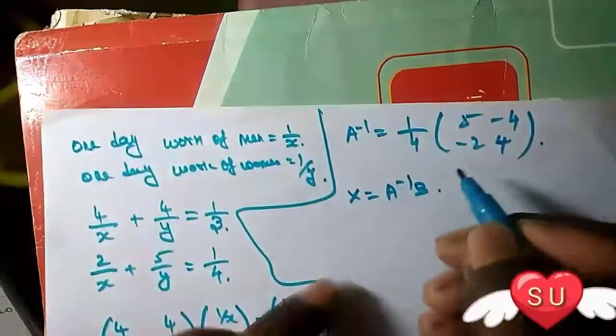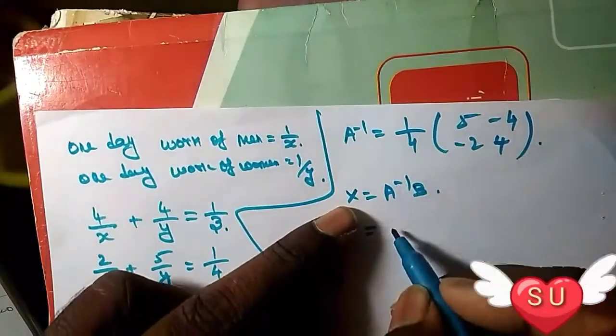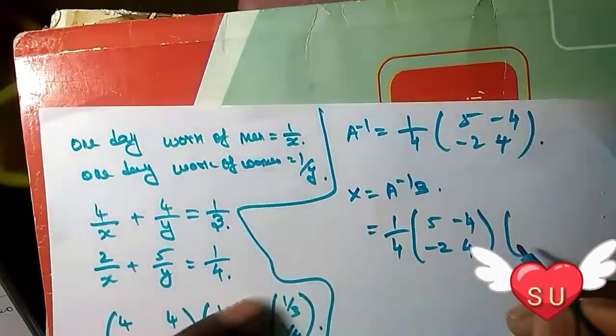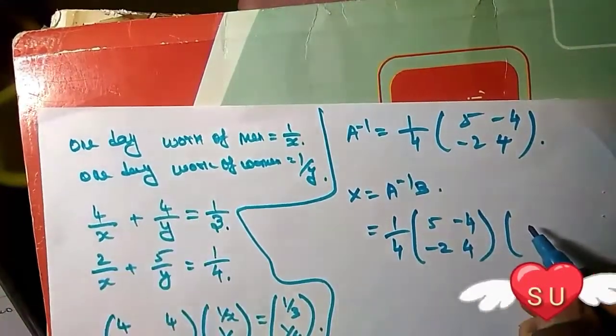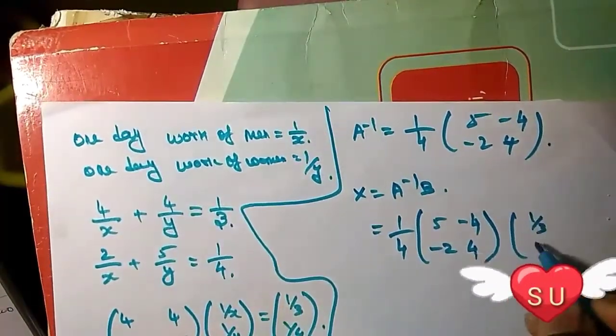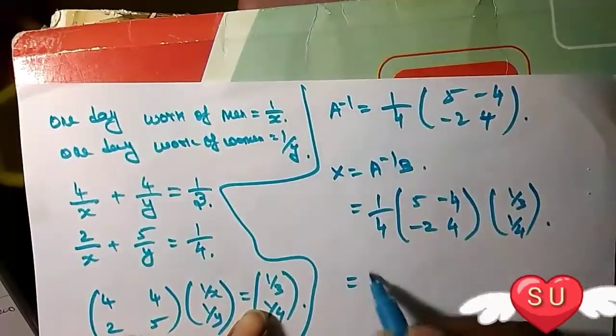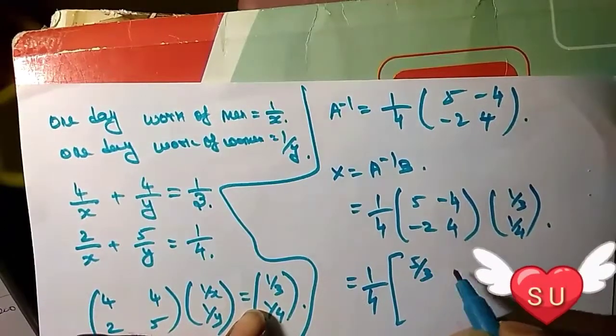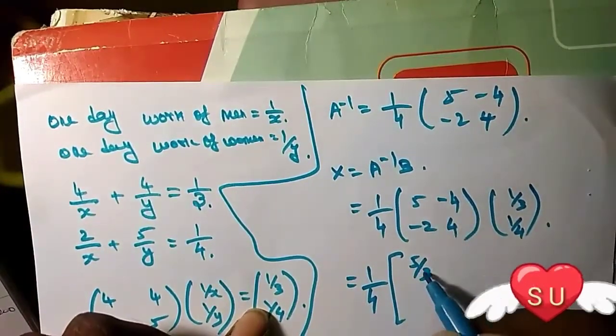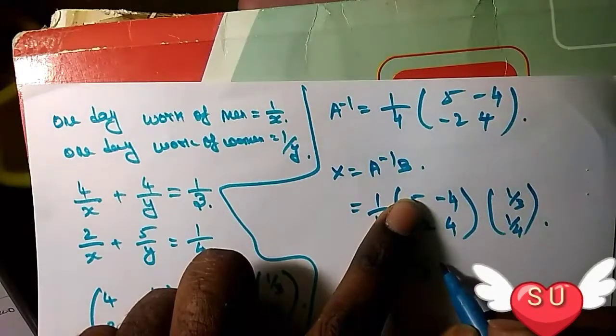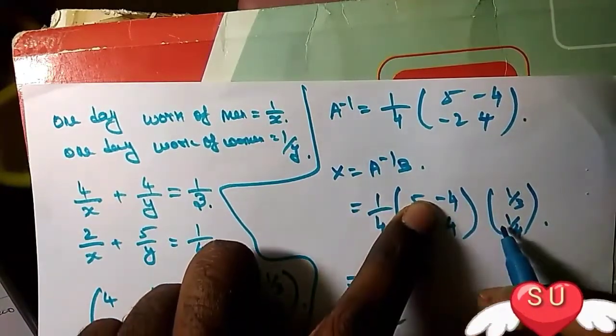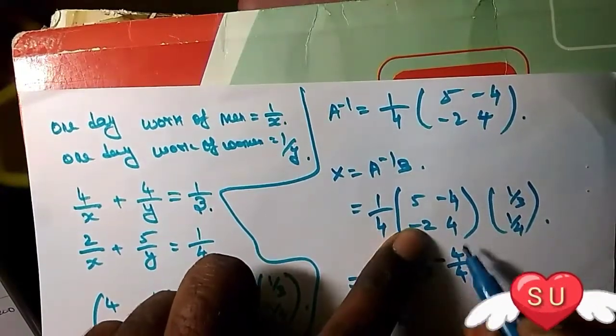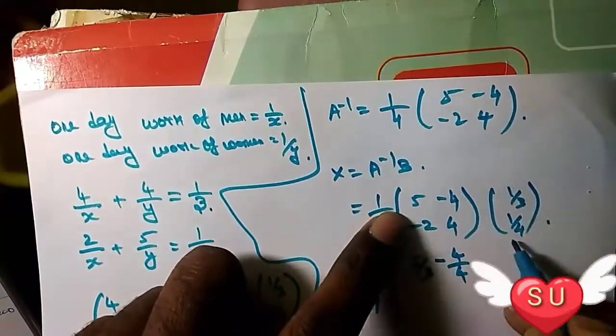Therefore X equals A inverse of B. A inverse is one divided by four times five, minus four, minus two, four. B is one by three, one by four. Now we do multiplication: five by three, five into one by three equals five by three, minus four by four.